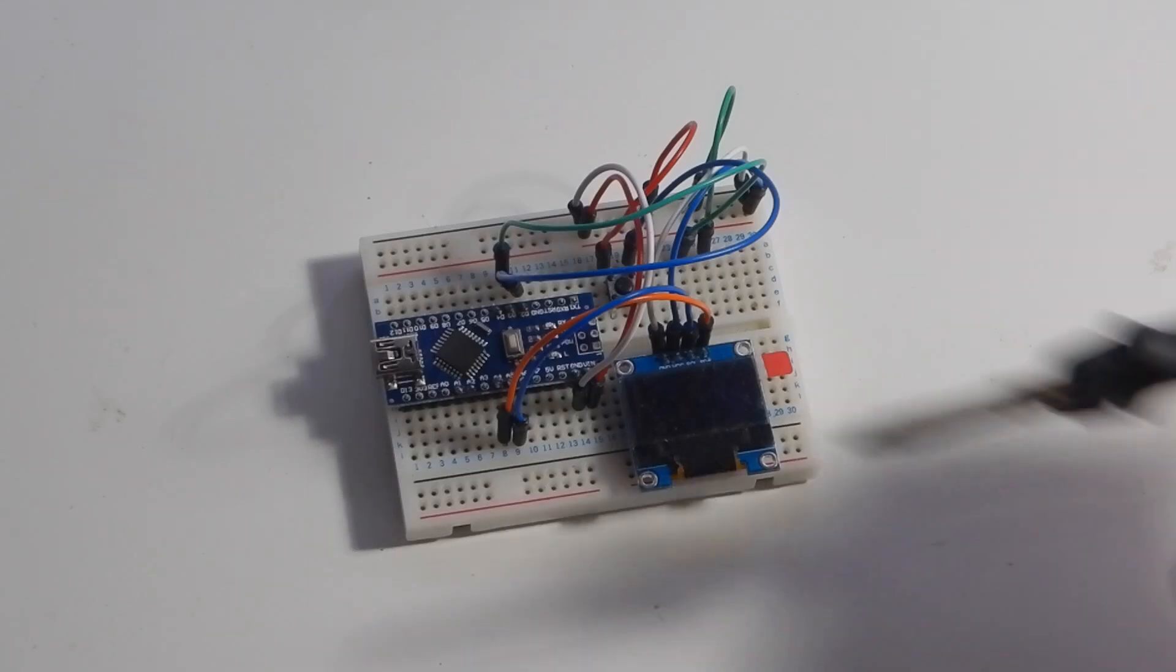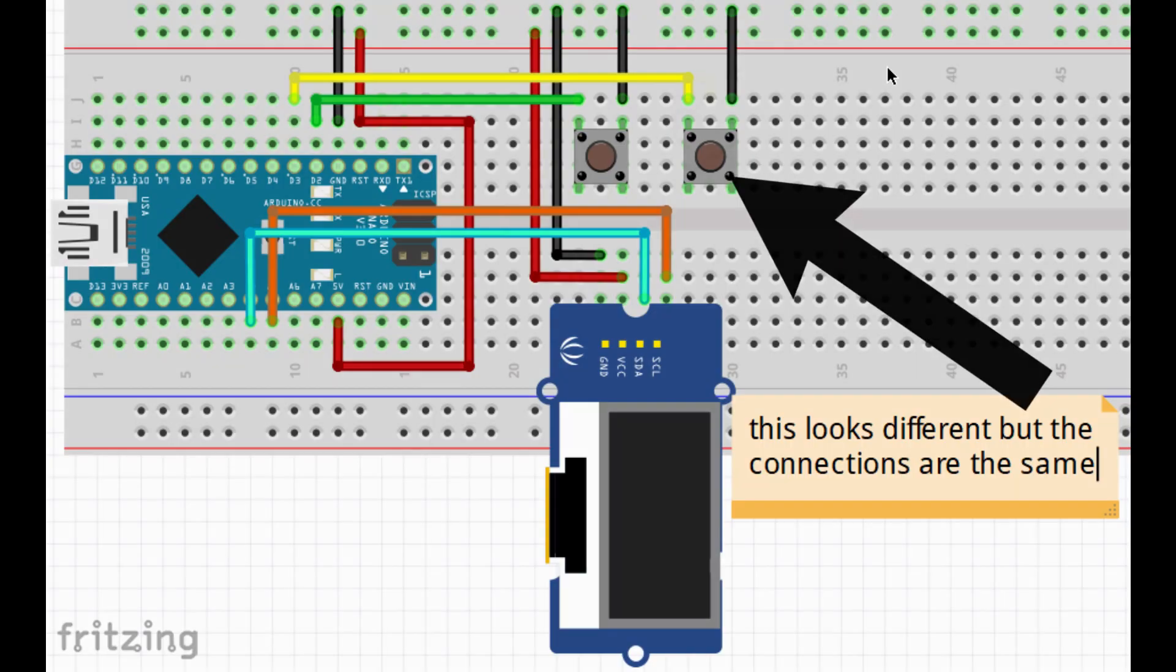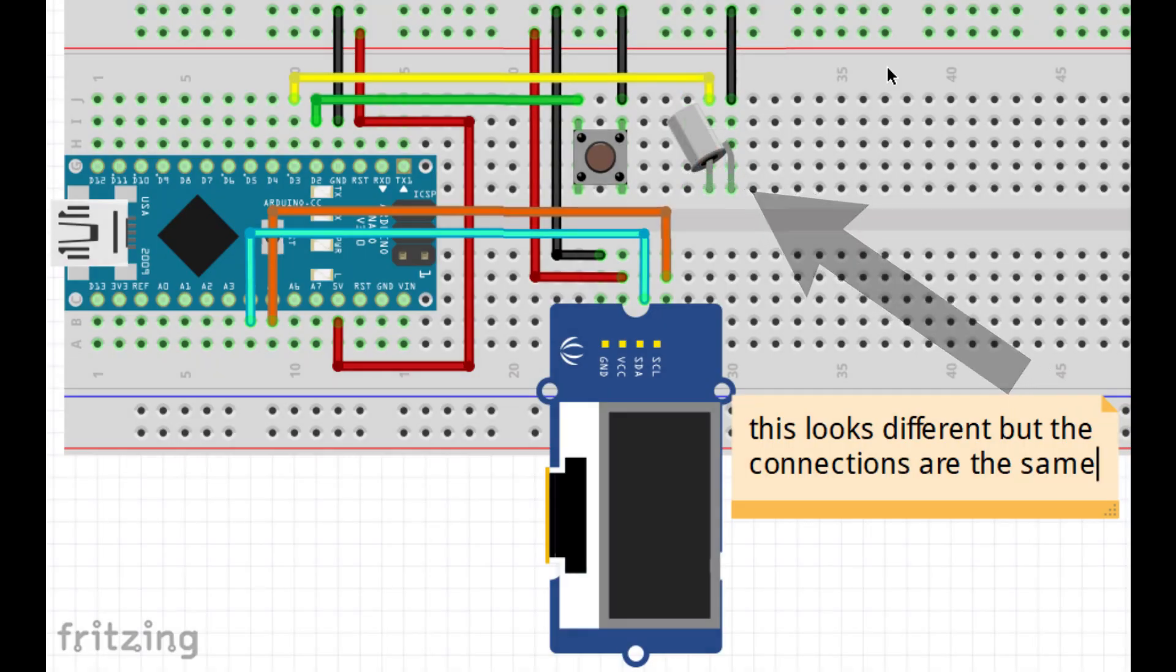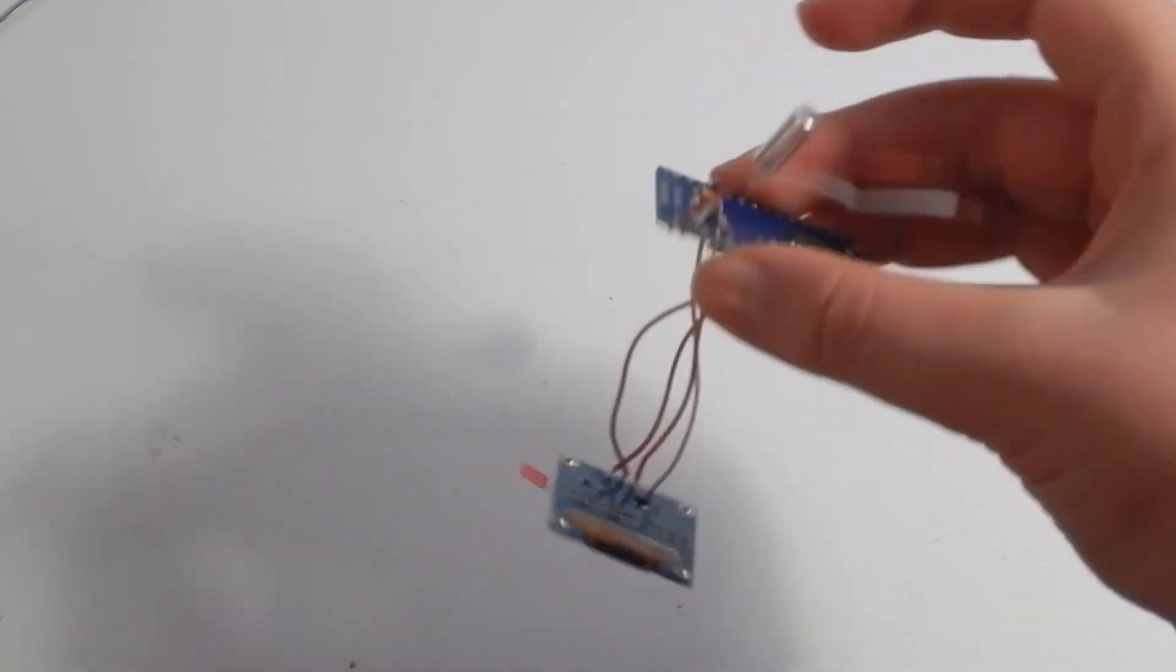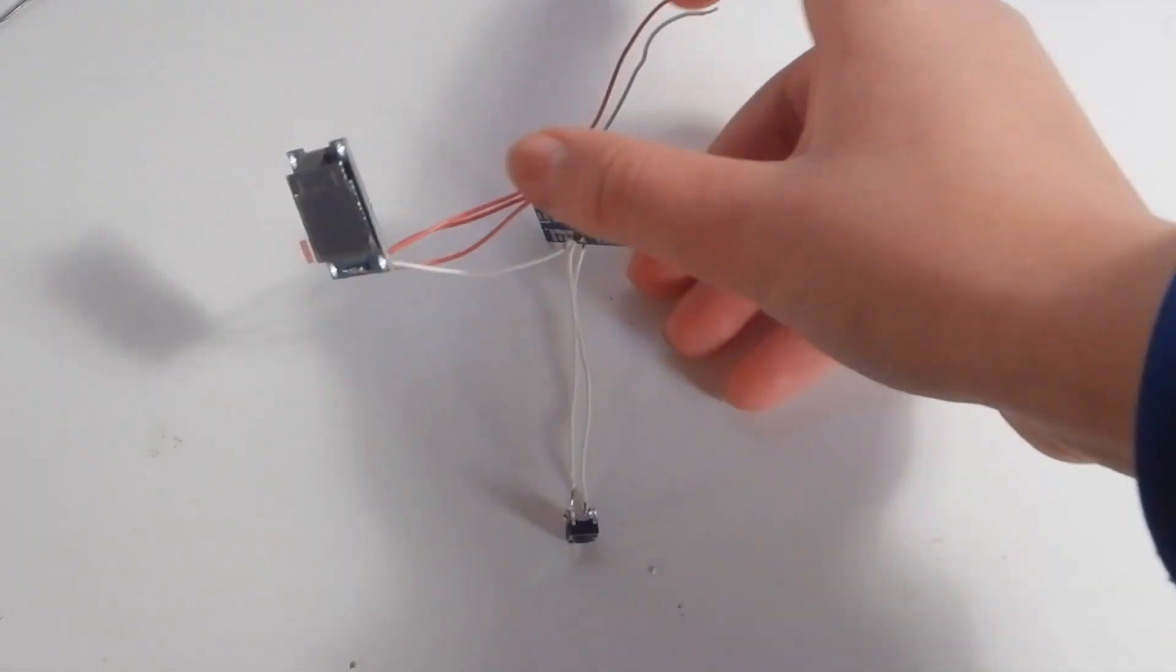Solder the circuit from before together with just one change. Replace the second button with a tilt switch but make sure it's rotated upside down. Otherwise it'll just keep on changing the screen.